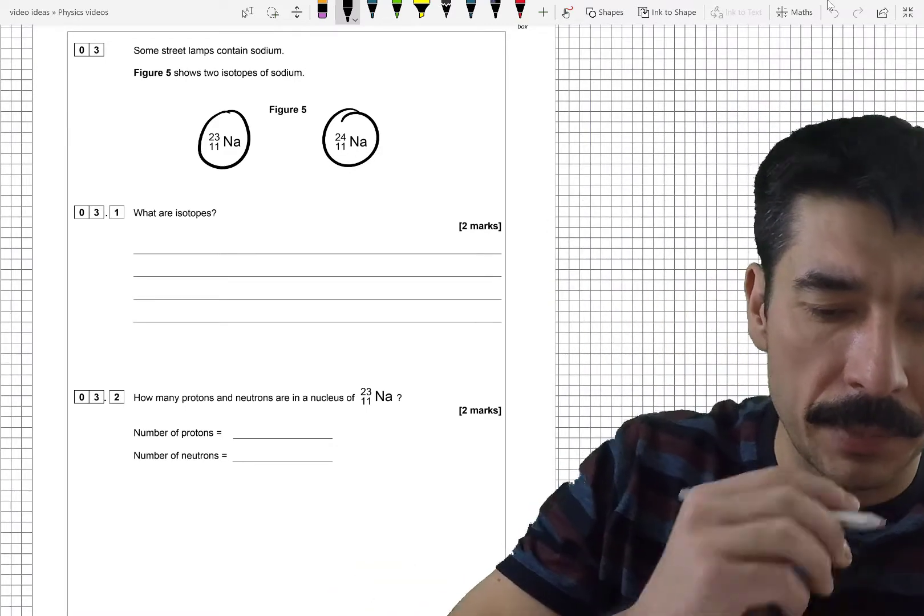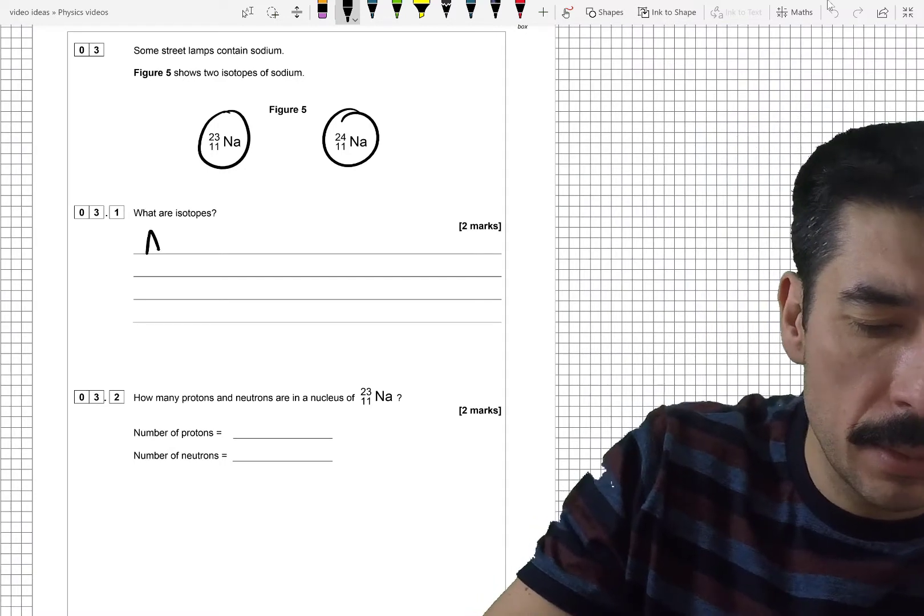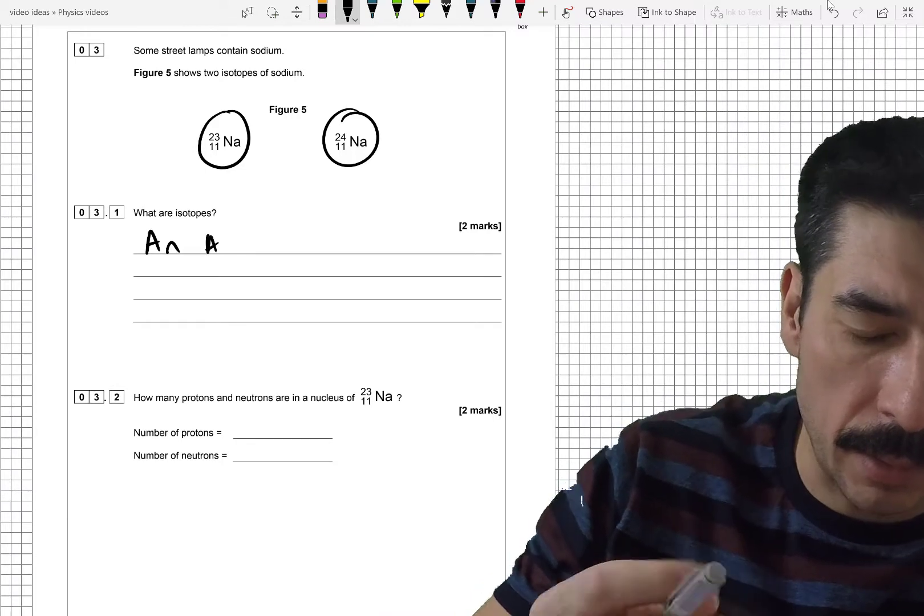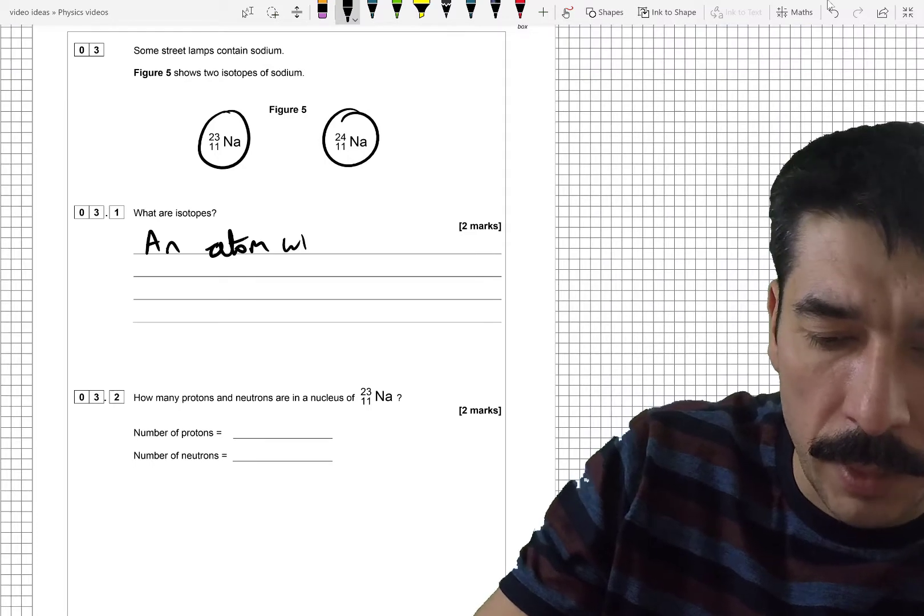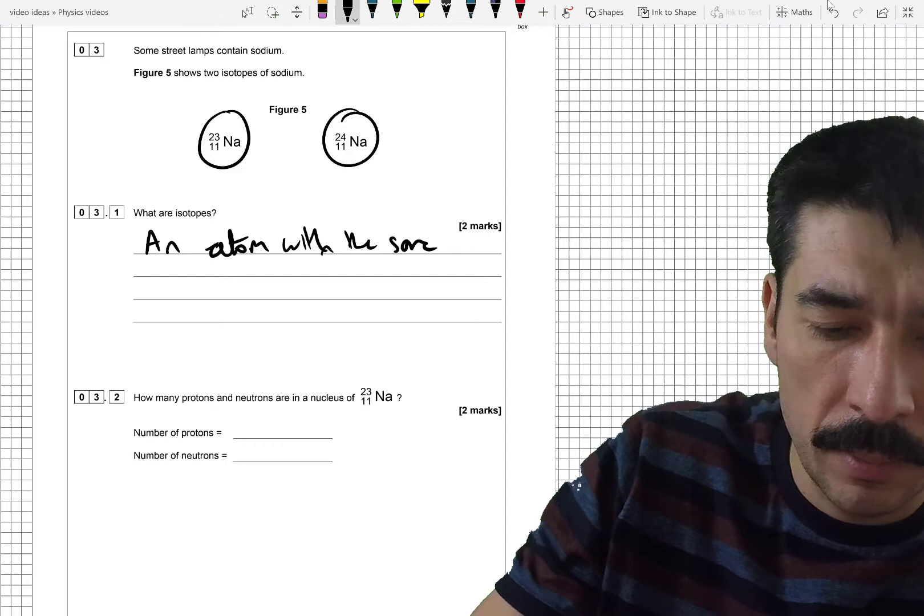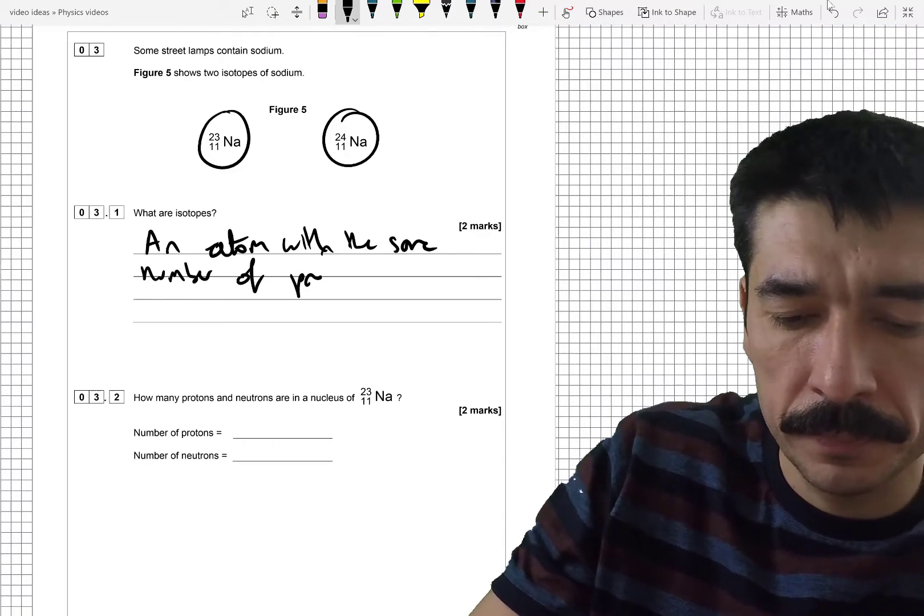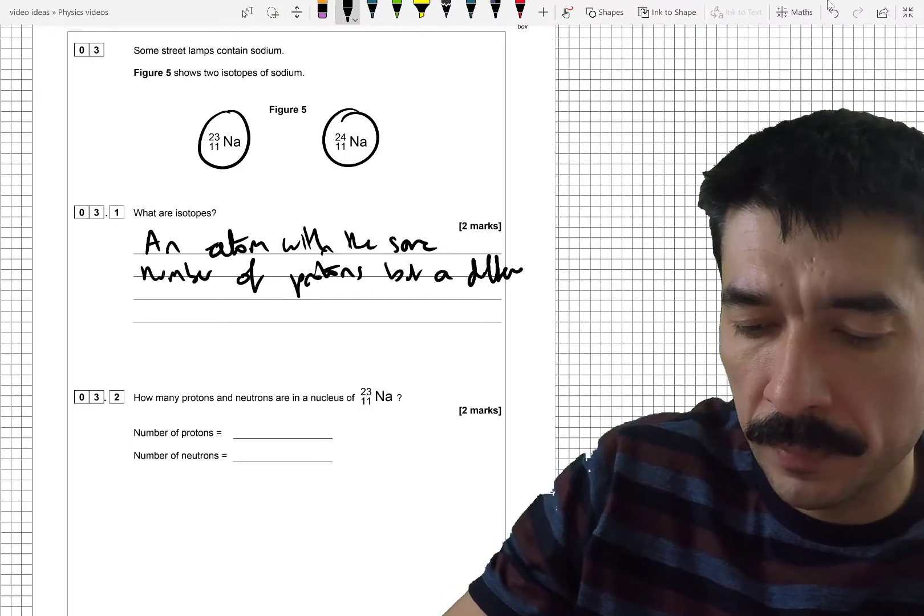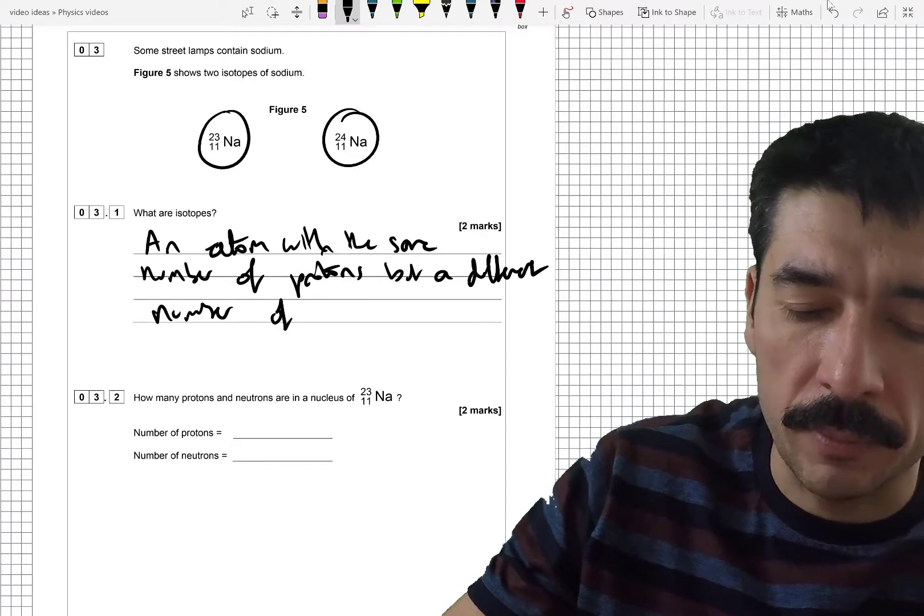Okay, so an isotope is an atom with the same number of protons but a different number of neutrons.